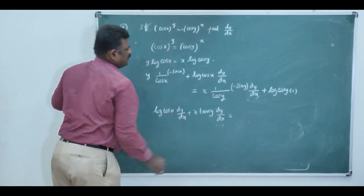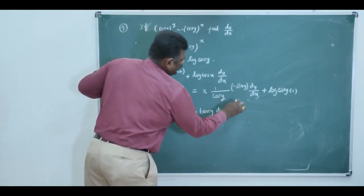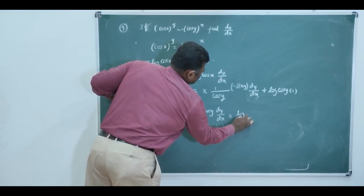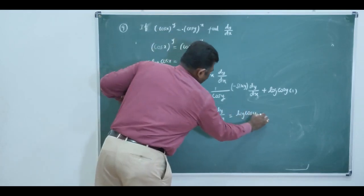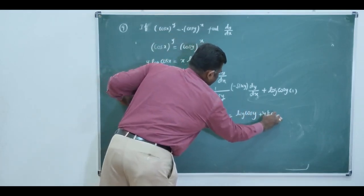Now, here is sin y by cos y, that is tan y. There, log of cos y. And here, this negative term become plus, plus y into tan x.